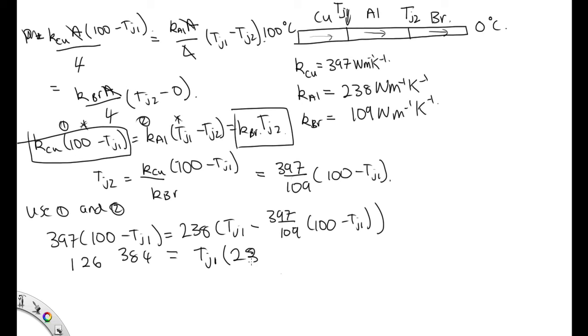Let's pull TJ1 out as a common factor, and then we've got this 238. We've got the 397 over 109 times the 238 for this TJ1, and then we've got this TJ1 here, which is 397. So solving, we can divide this through by this, and we end up with TJ1 is equal to 84.2 degrees C.